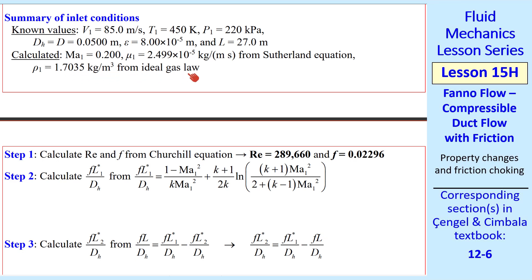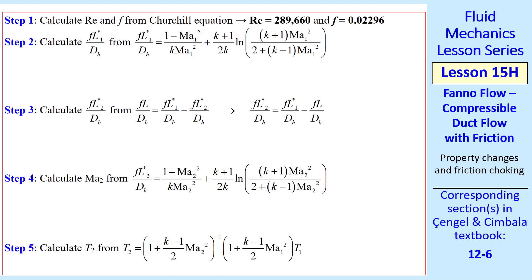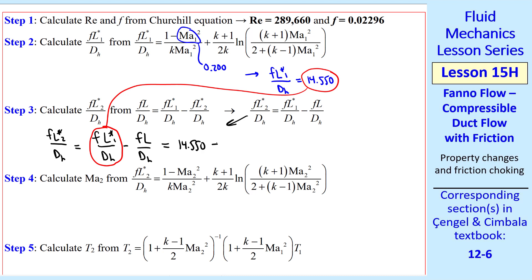Now let's follow our step-by-step procedure. We have enough information to calculate the Reynolds number, and therefore F from the Churchill equation. I get these two values. Step 2 is to calculate F L star 1 over DH. From our workhorse equation, we plug in Mach number 1 as 0.200. I get 14.550. Step 3 is to use this value here to solve for F L star 2 over DH. Let's rewrite this equation and plug in the numbers. We use this value for this term, 14.550. We plug in F in 0.02296 from here. Length L was given, and our hydraulic diameter is the same as d, the diameter of the pipe, for a round pipe.